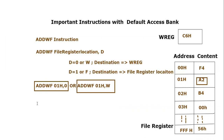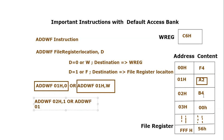Now let's deal with another possible scenario. If we write ADDWF and this time add the working register content with location 02 hex, and we want to put the result in the file register, we can write simply F or also write 1. So we write: ADDWF 02h, F — or equivalently ADDWF 02h, 1. Both perform the same thing. The content of 02 hex which is B4 will be added with C6 from the working register.